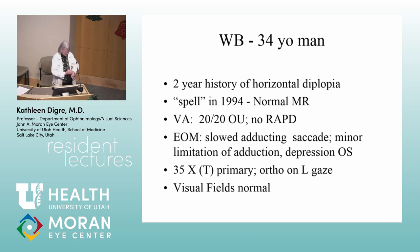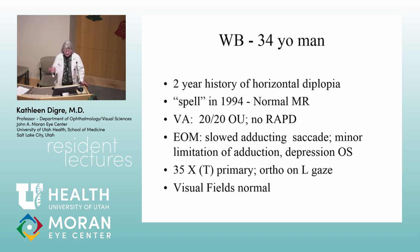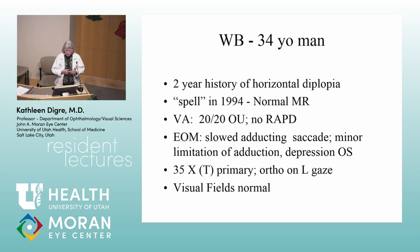This is a 34-year-old man with a two-year history of horizontal double vision. He had a spell in 1994 and a normal MRI scan. On exam, his acuity was 20/20, no afferent defect, slightly slowed adducting saccades, minor limitation of adduction and depression in the left eye, a 35-diopter exophoria that was intermittently tropic, and normal visual fields.